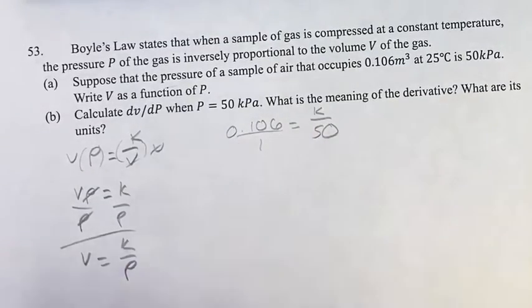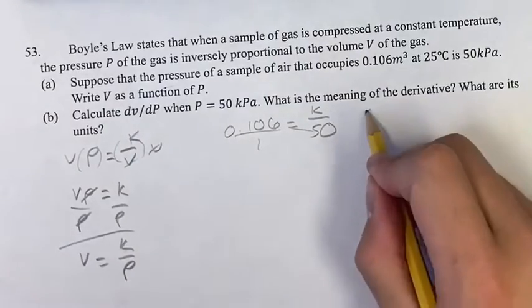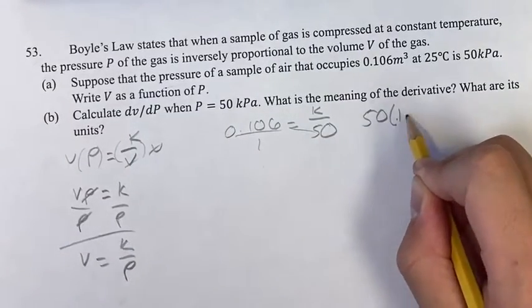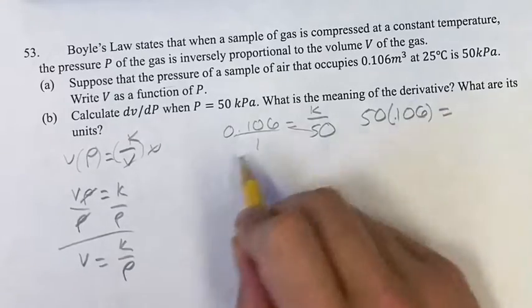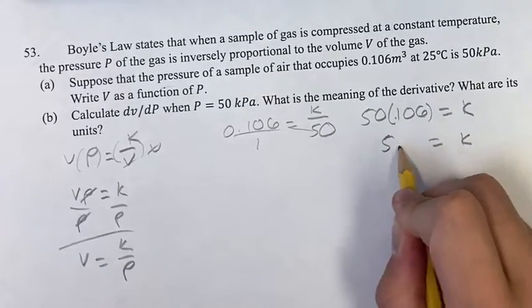Imagining that as dividing by 1, we can cross-multiply here. So 50 times 0.106 equals K times 1, which is just K. This gives us K equals 5.3.